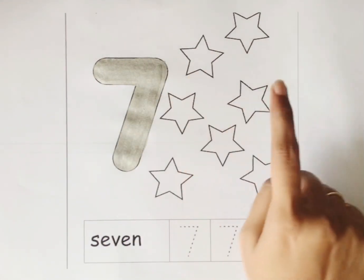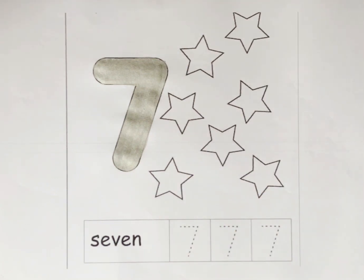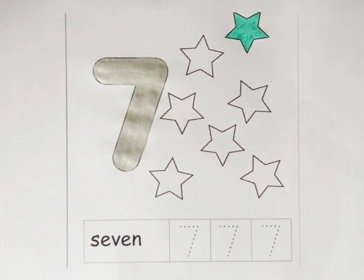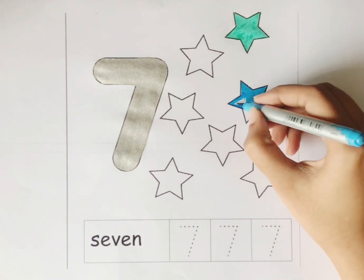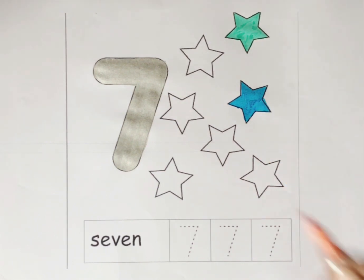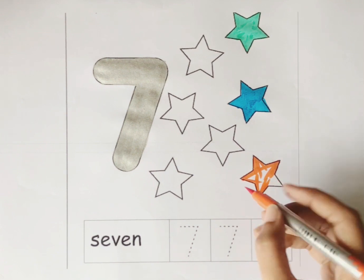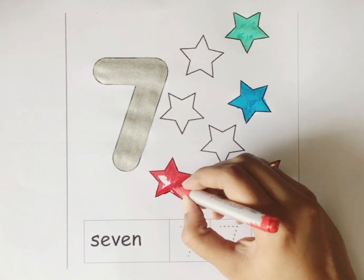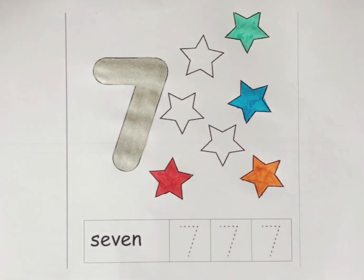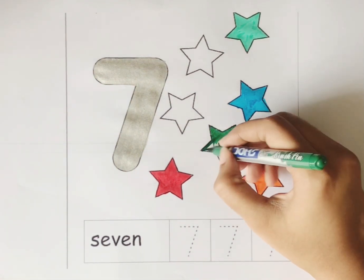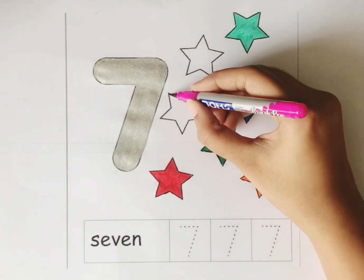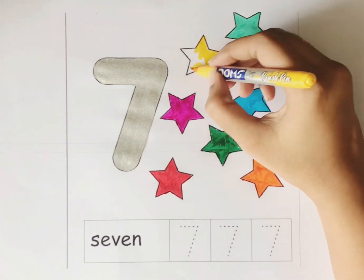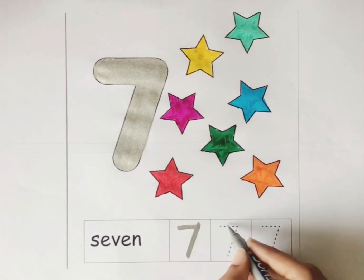Number 7. Let's color the number 7. Silver color. Let's count the total number of stars: 1, 2, 3, 4, 5, 6, and 7. We have 7 stars. Sea green color. Sky blue color. Orange color. Red color. Green color. Pink color. Yellow color. Let's trace the number 7. Number 7.